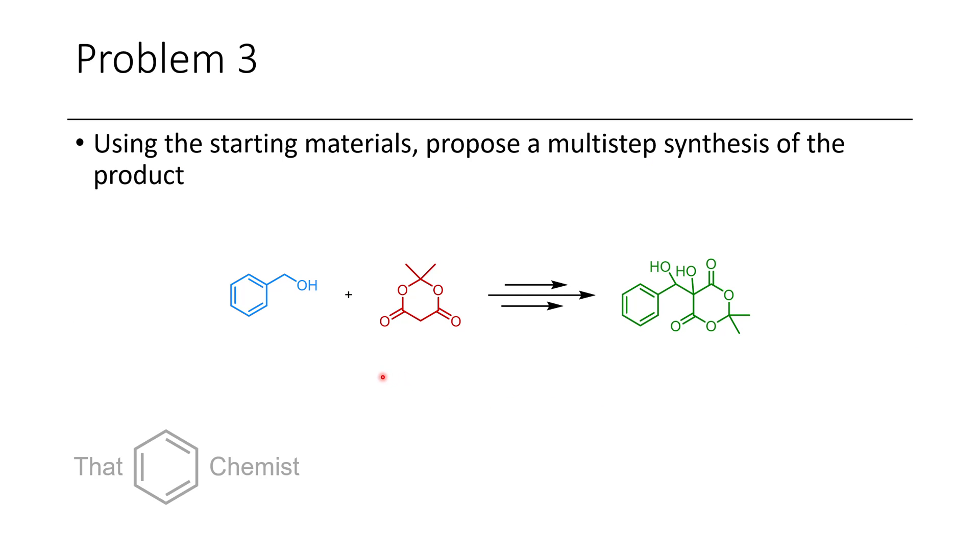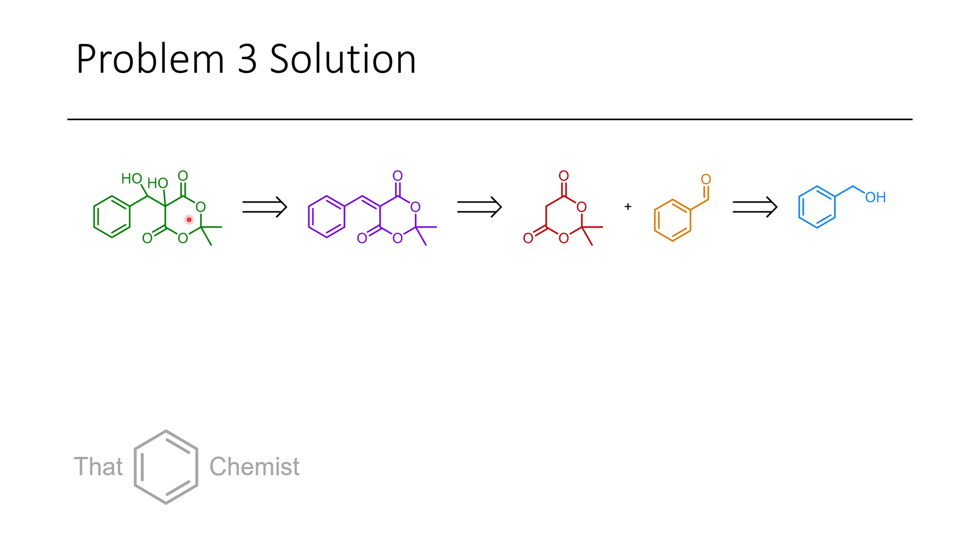Now let's go to problem three. In problem three we have this benzylic alcohol and Meldrum's acid. Somehow we have to get this dihydroxy Meldrum's acid derivative. In the reverse direction we could imagine that this 1,2-diol has come from a dihydroxylation reaction of an alkene. This could be derived through what's called a Knoevenagel condensation which is just a special type of aldol condensation between an active methylene compound and an aldehyde. And this could be derived from benzyl alcohol via oxidation.